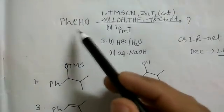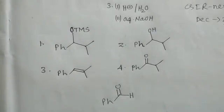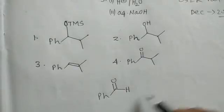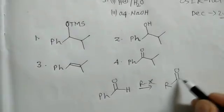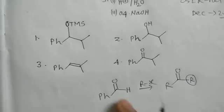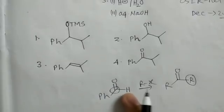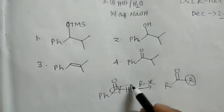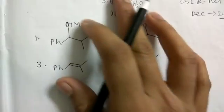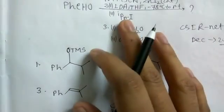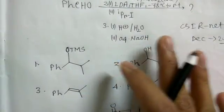Benzaldehyde has only one position for alkylation. If you want to put any R group there, you need to do umpolung at that center, because there is no other hydrogen atom that you can abstract with base — the aldehyde hydrogen is the only option. Since isopropyl iodide is an electrophile, you need umpolung to react with it.